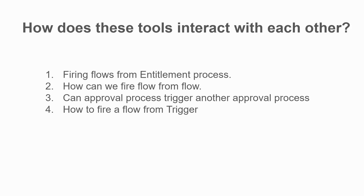The third point is how these tools interact with each other. For example, you might be asked: after the entitlement process has been executed, can I fire a flow? You can fire a flow, but specifically from a milestone — and from a milestone you can only fire an auto-launch flow, not any other type. Similarly, you cannot fire a screen flow from a screen flow — instead you have to use an auto-launch flow as a child.